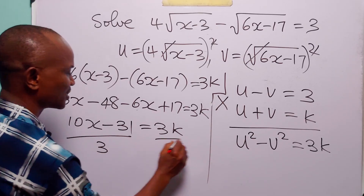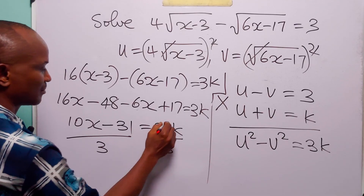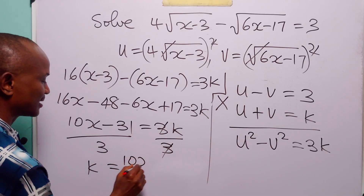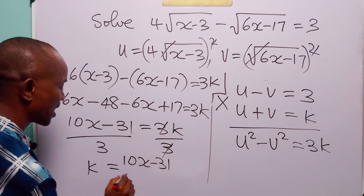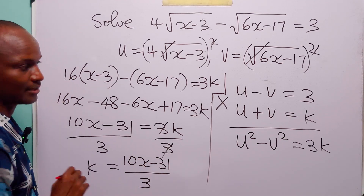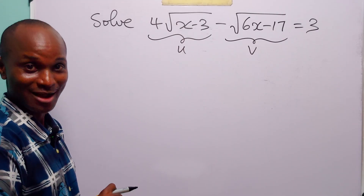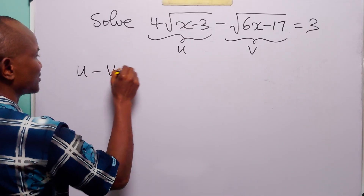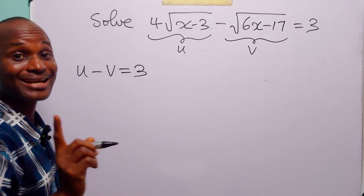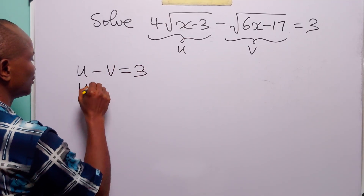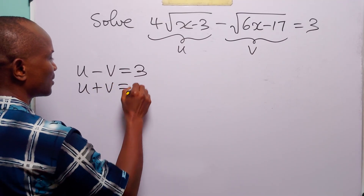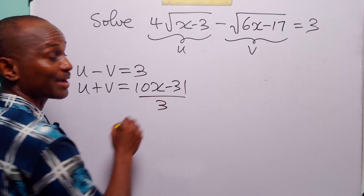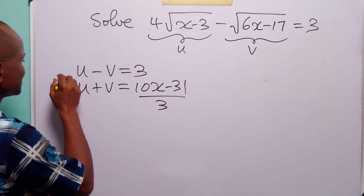To find k, we divide both sides by 3, so k = (10x-31)/3. Now we have two equations: the original u - v = 3, and its conjugate u + v = (10x-31)/3.